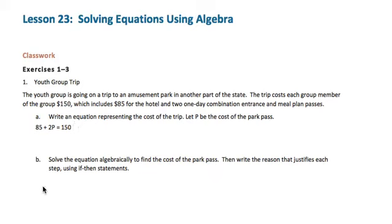Then in Part B, we're asked to solve the equation algebraically to find the cost of the park pass, and write the reason that justifies each step using if-then statements.